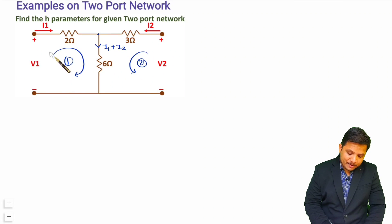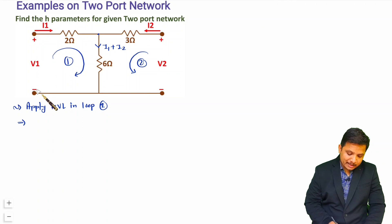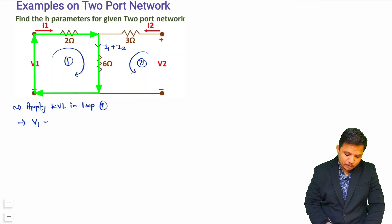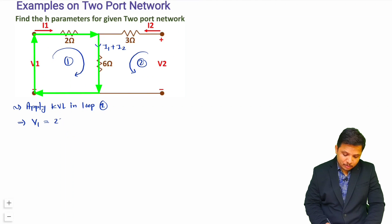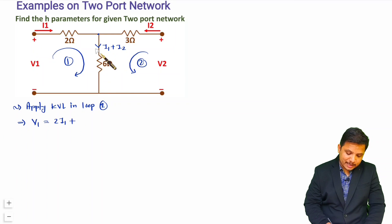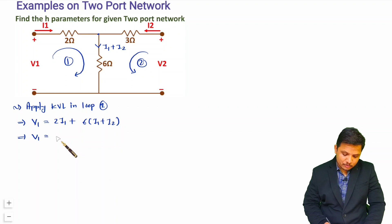Let us apply KVL in loop 1. V1 appears from minus to plus, so V1 equals the voltage across the 2-ohm resistor — current i1 flows through it in the loop direction, giving 2·i1 — plus the voltage across the 6-ohm resistor where current is i1 plus i2 in the loop direction, giving 6·(i1 + i2). Simplifying, V1 = (2 + 6)·i1 + 6·i2 = 8·i1 + 6·i2. Let us call this equation 1.